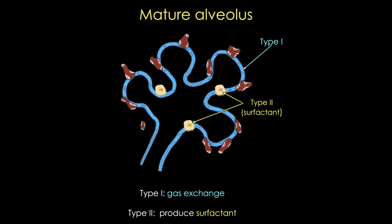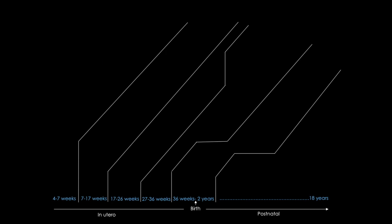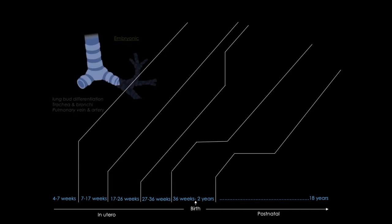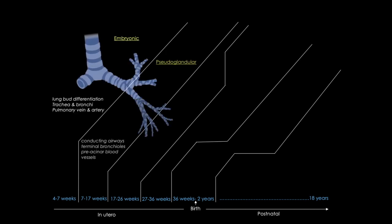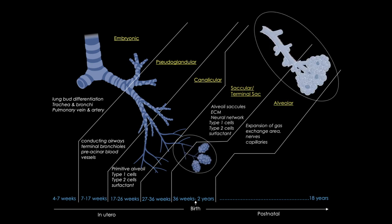Now let's recap. We've formed the trachea, the two lungs, five lobes and numerous segments, the pleura and the pleural cavity, and we've set up the patterning of the adult lungs. The gas exchange unit has been built and surfactant is being produced. The lungs will continue to develop postnatally, but at this point they're capable of intaking air and performing gas exchange.